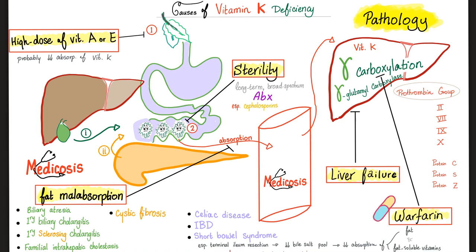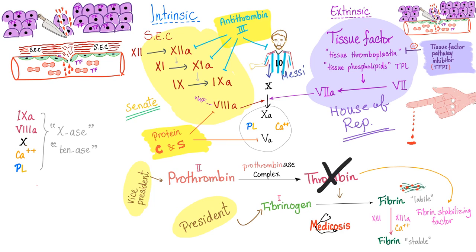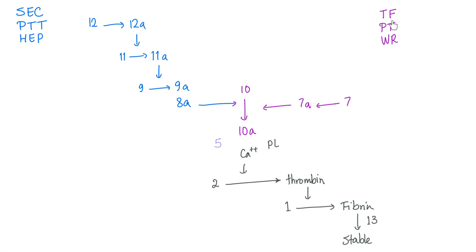Warfarin inhibits factors 2, 7, 9, and 10. Does warfarin prolong PT or PTT? The answer is both. It's just easier to monitor warfarin using PT-INR. The extrinsic pathway is short — just factor 7 — and monitored by PT. The intrinsic pathway is longer, with more factors, and monitored by PTT.